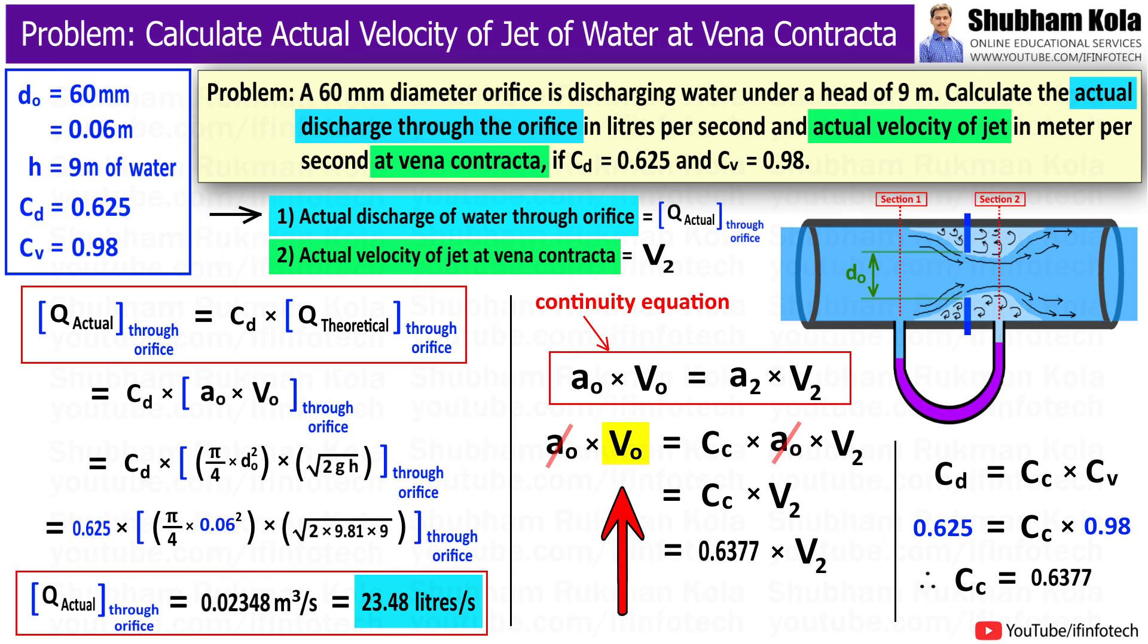V₀ is the velocity of water flowing through the orifice, that is √(2gh), where h = 9 meters and g = 9.81 m/s². After calculating this, we get the actual velocity of jet at vena contracta, V₂ = 20.83 m/s.